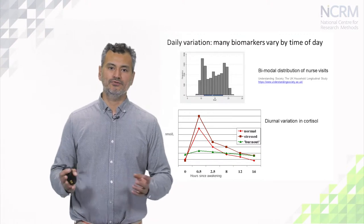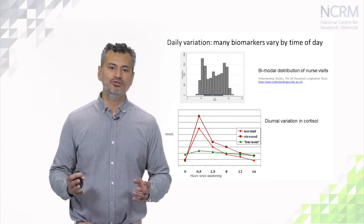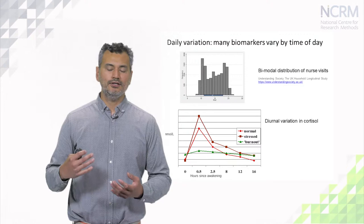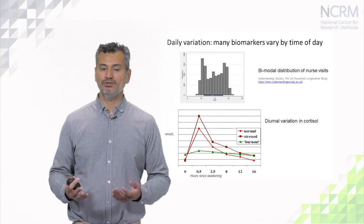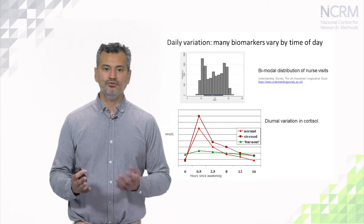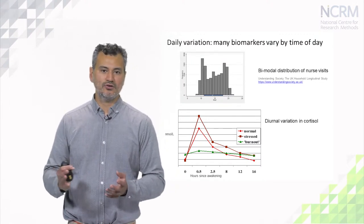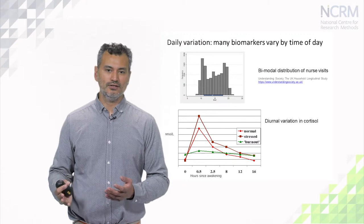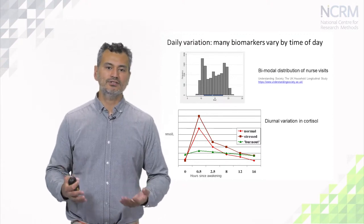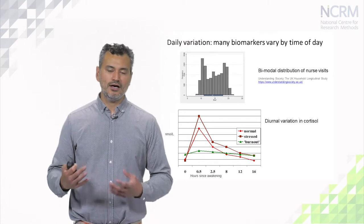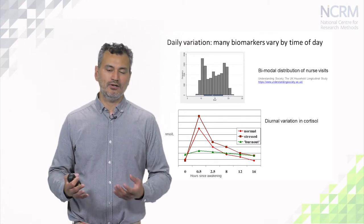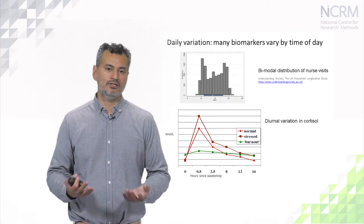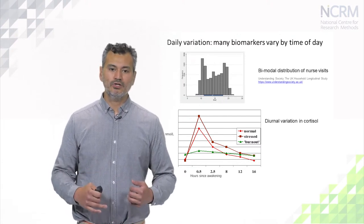In the top graph, I've shown the distribution of times in which nurses visit people at home in Understanding Society. We see that it's a bimodal distribution — nurses tend to visit people just after 10 o'clock in the morning, or if people are working, around 6 or 7 pm at night. So if time of day has an effect on particular analytes, we really need to be considering what time people took their biological samples.